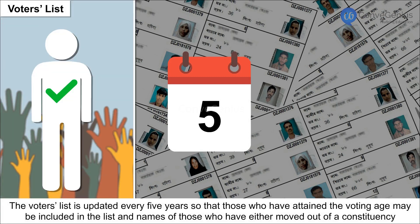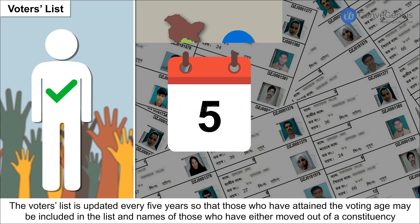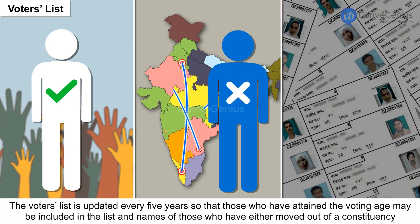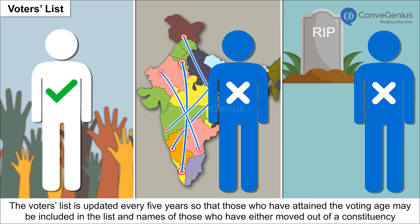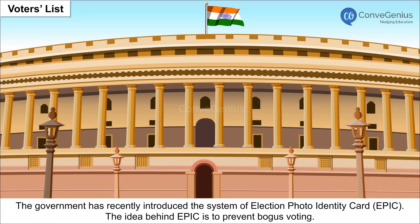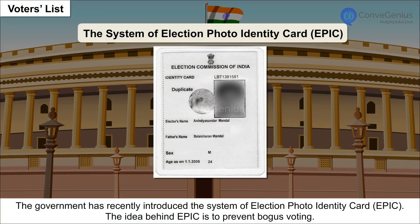Names of those who have either moved out of a constituency or those who are dead may be deleted. The government has recently introduced the System of Election Photo Identity Card, or EPIC.